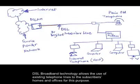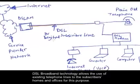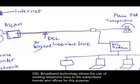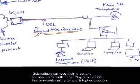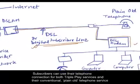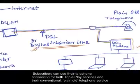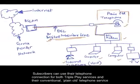DSL Broadband technology allows the use of existing telephone lines to the subscribers' homes and offices for this purpose. Subscribers can use their telephone connection for both TriplePlay services and their conventional plain old telephone service at the same time.